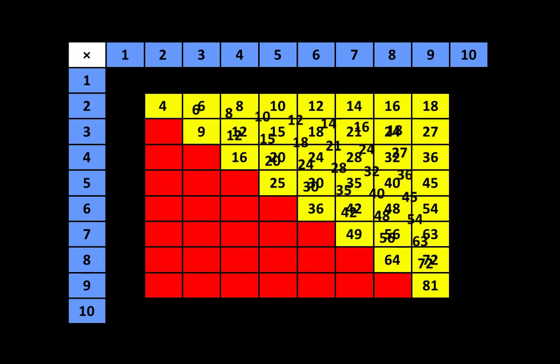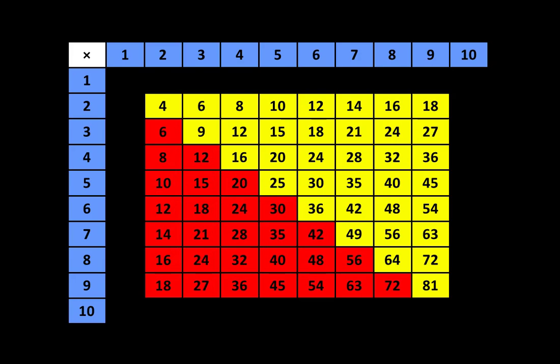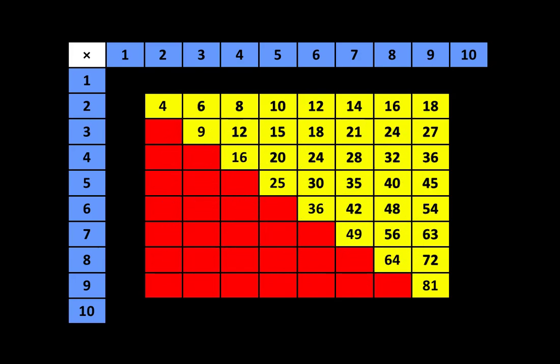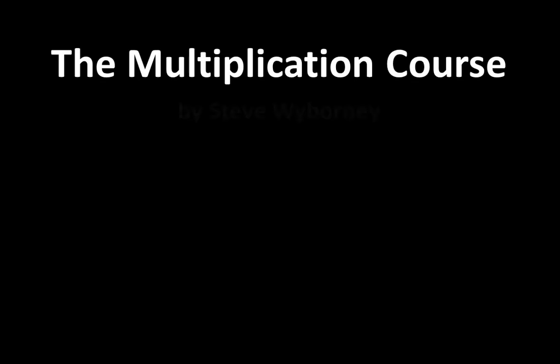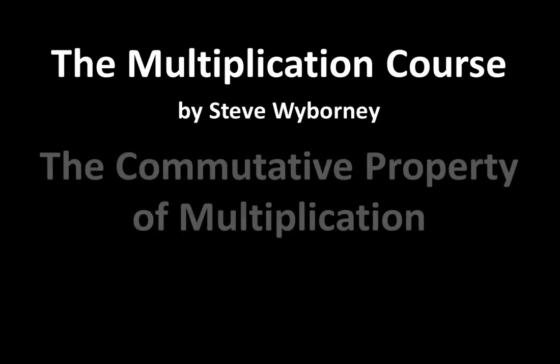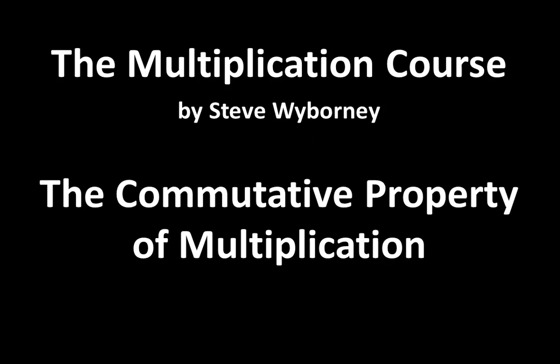Here's another example, and I'll return to this chart with the red on it in the next video. In the next video, we're going to combine all three of the properties of multiplication that we've looked at so far to help us take a giant step forward in learning about multiplication facts and multiplication concepts. This is the Multiplication Course. My name is Steve Wyborny and this is the commutative property of multiplication.